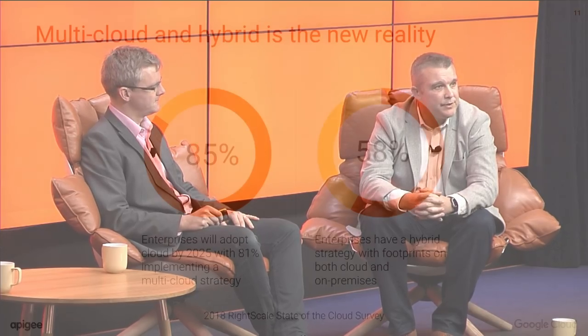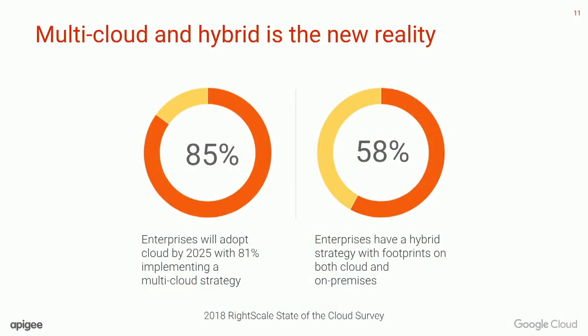It's super critical that in this complex landscape, your API consumers — whether they're internal or external — don't get infected with that complexity. They have simple APIs to visualize across the breadth of your organization. A RightScale State of the Cloud survey released this year shows that by 2025, 85% of organizations will have adopted cloud. The pace of cloud adoption is not going to slow. But interestingly, 81% of those organizations surveyed also said they were implementing a multi-cloud strategy, which really means we're going to have that type of fragmentation we've previously discussed.